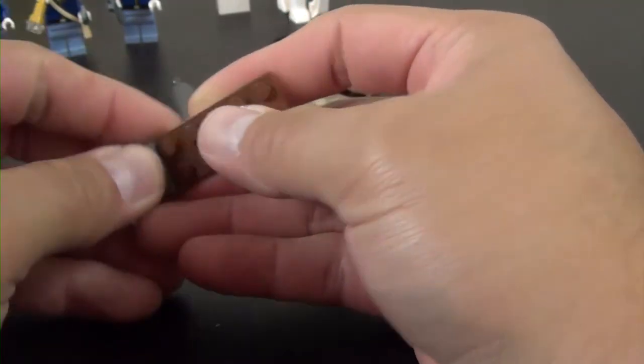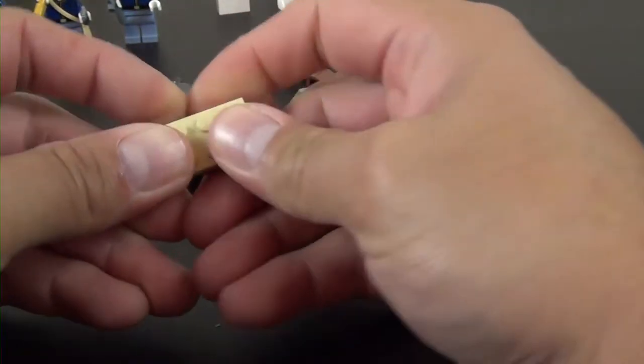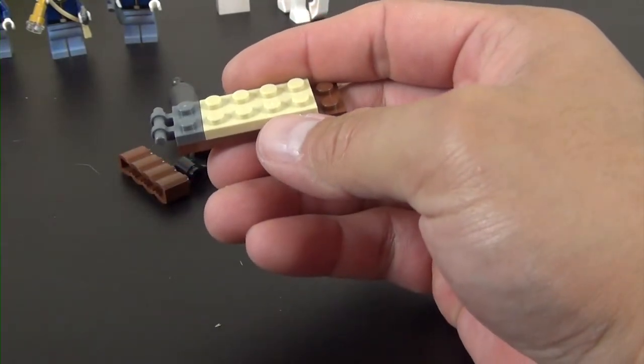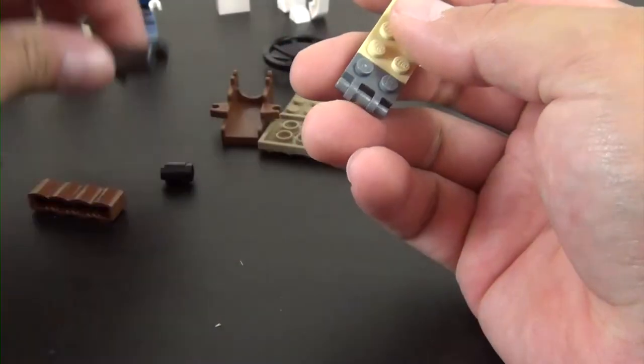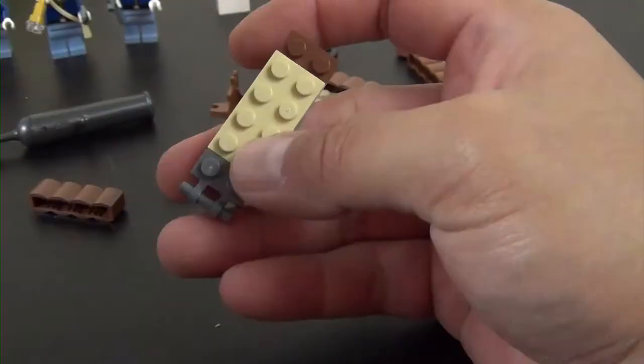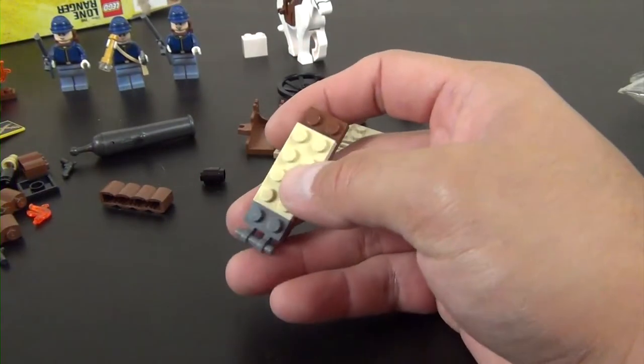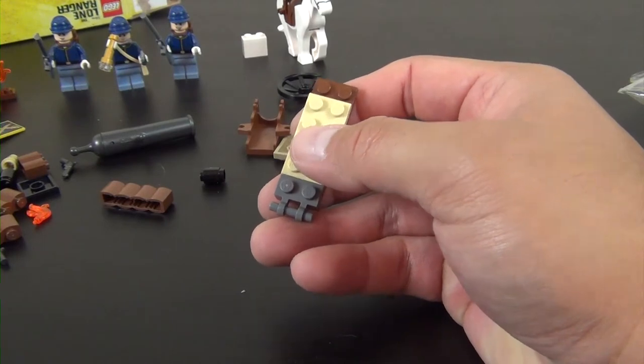Next we're going to build a cannon. The cannon is actually pre-molded, it's this piece. We're going to more or less build the cart element for it.